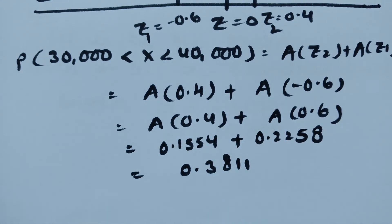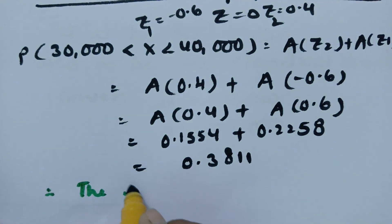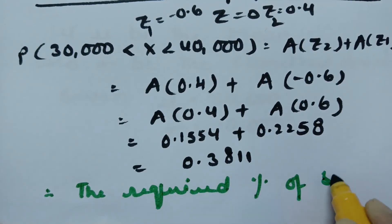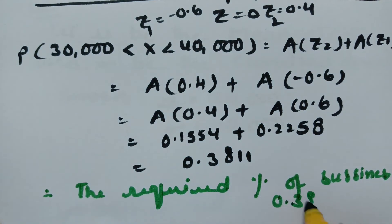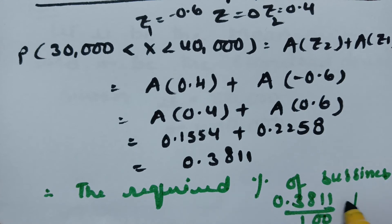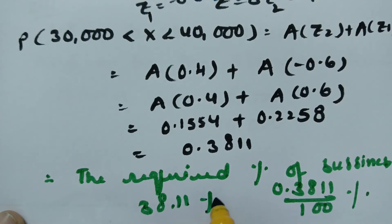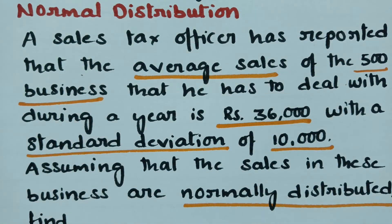Therefore, the required percentage of businesses with sales between 30,000 and 40,000 is 0.3811 × 100% = 38.11%, which is nearly 38%. To summarize: we draw the figure, select the z values, plot the area, use the table, and add the results.